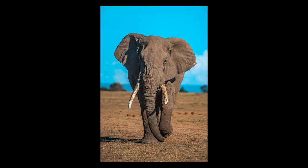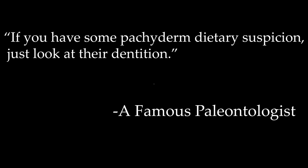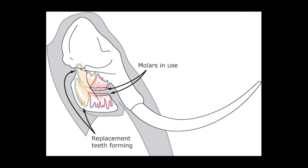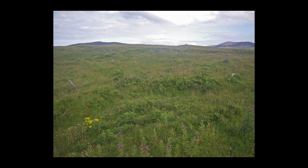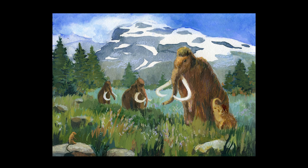One of the most interesting similarities is their teeth. As a famous paleontologist once said: if you have some pachyderm dietary suspicion, just look at their dentition. Mammoth teeth show how these animals lived, probably more than any other part of their body. The teeth are like elephant teeth — large, flat molars with enamel ridges running across the surface — specialized for grinding up tough grasses. This shows mammoths lived on the open grasslands of the northern hemisphere, probably in social herds traveling the plains for nutrients, mirroring elephants on the warm grasslands of the modern era.